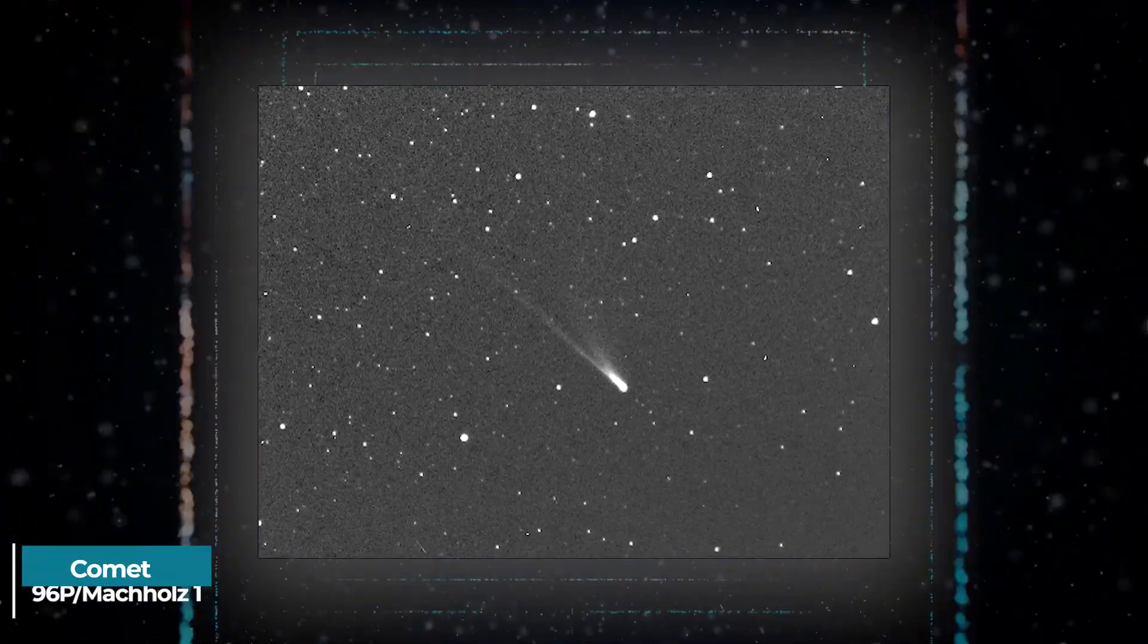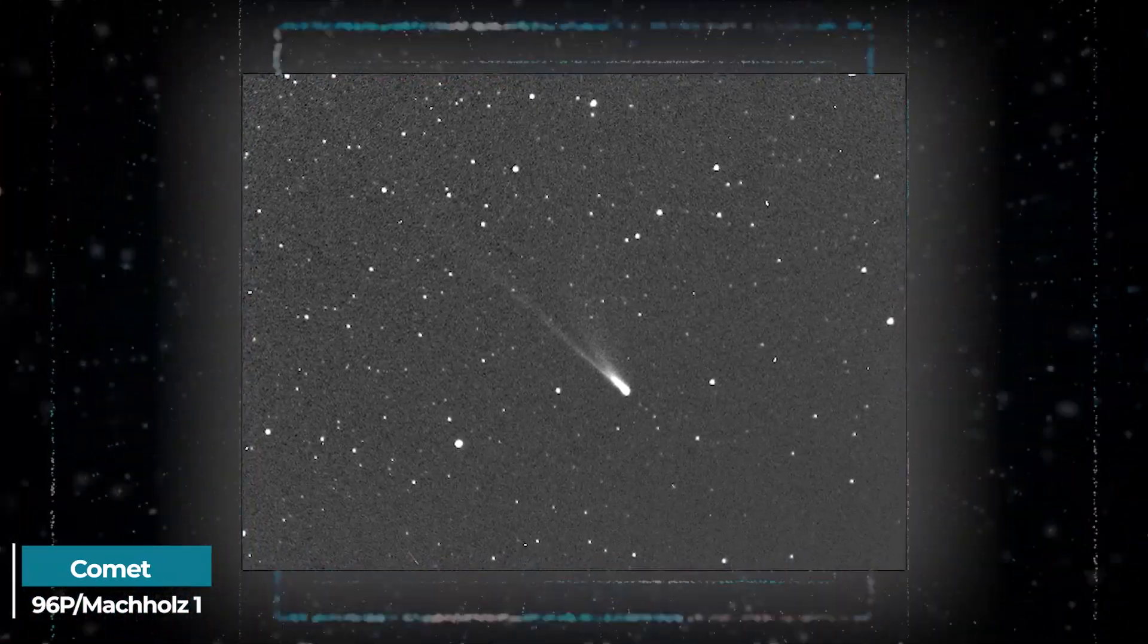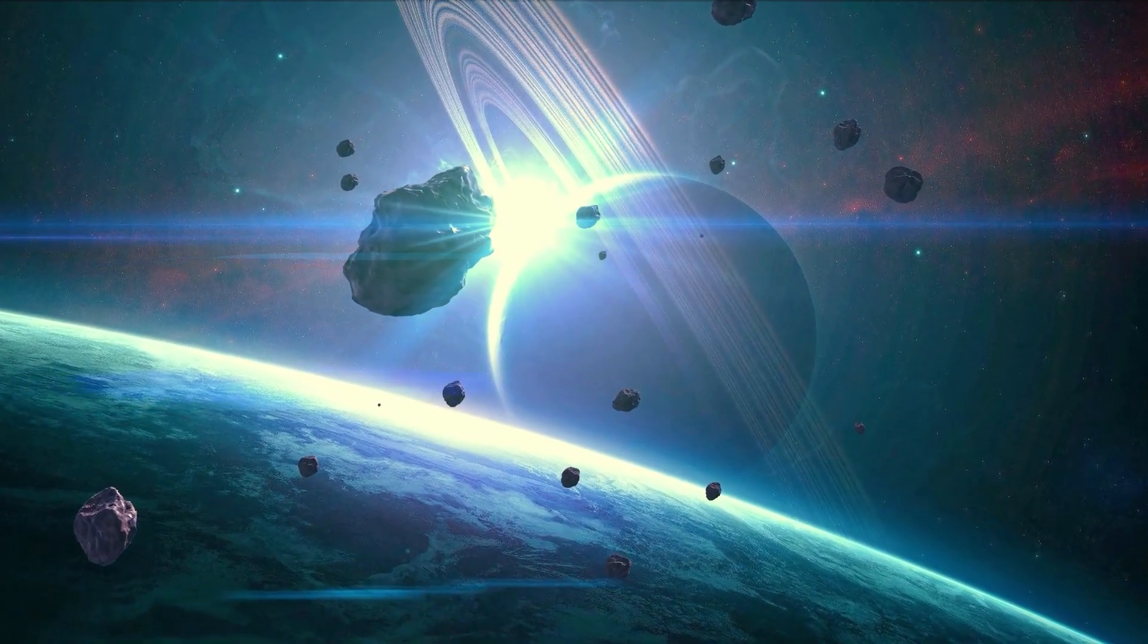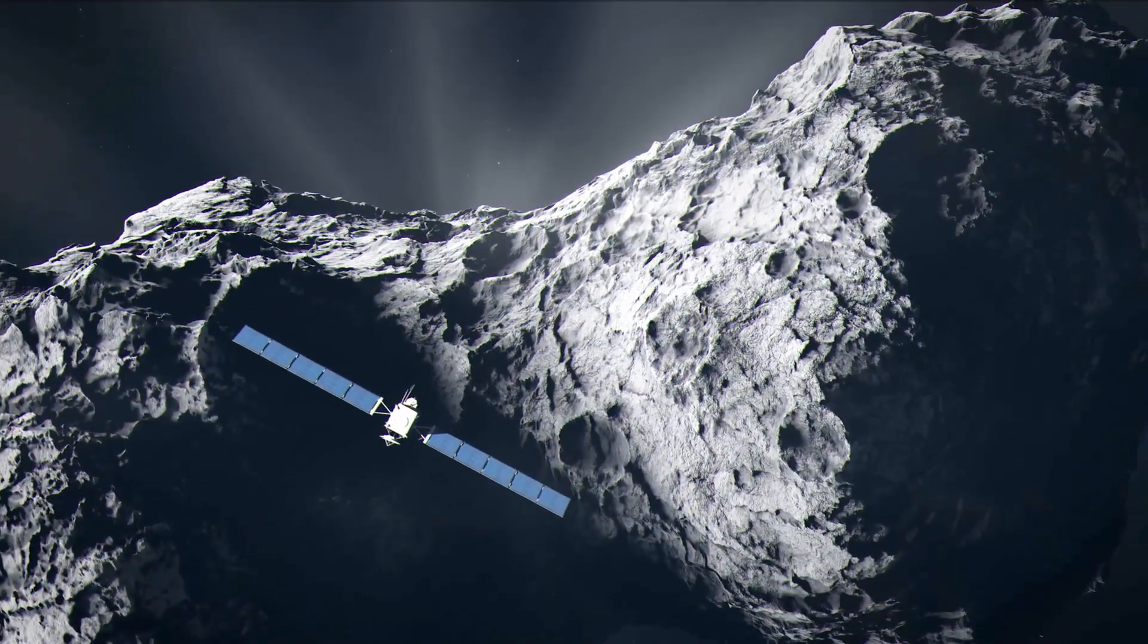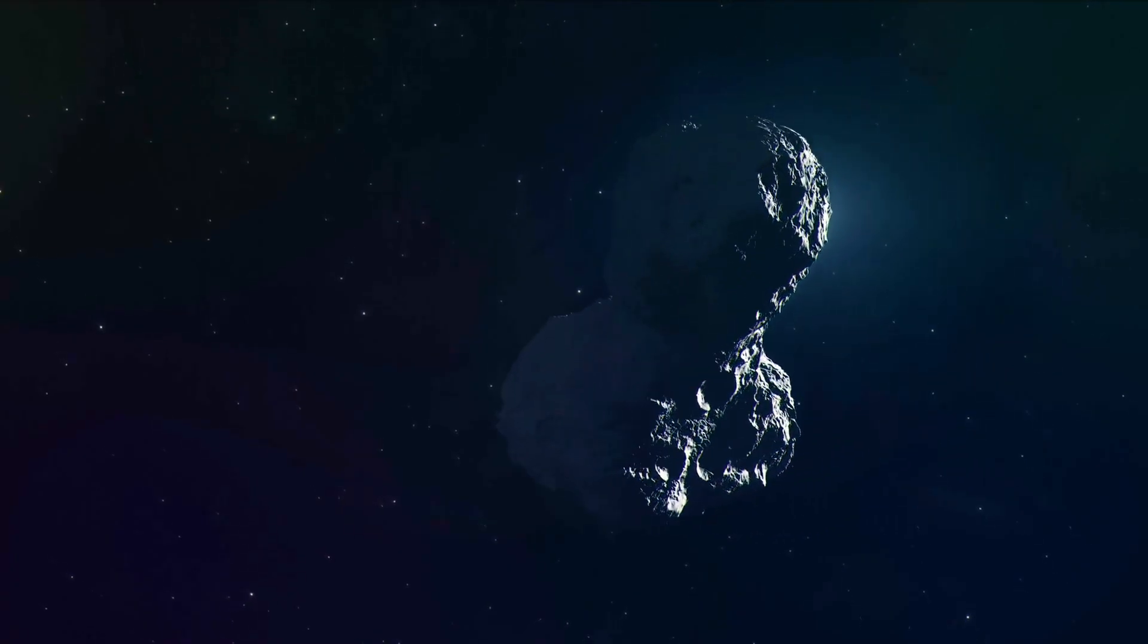The non-hyperbolic comet 96P/Mockholes-1, which was discovered in 1986 and is more than two-thirds the height of Mount Everest, was detected in January as it made its sixth and closest known approach to the Sun.